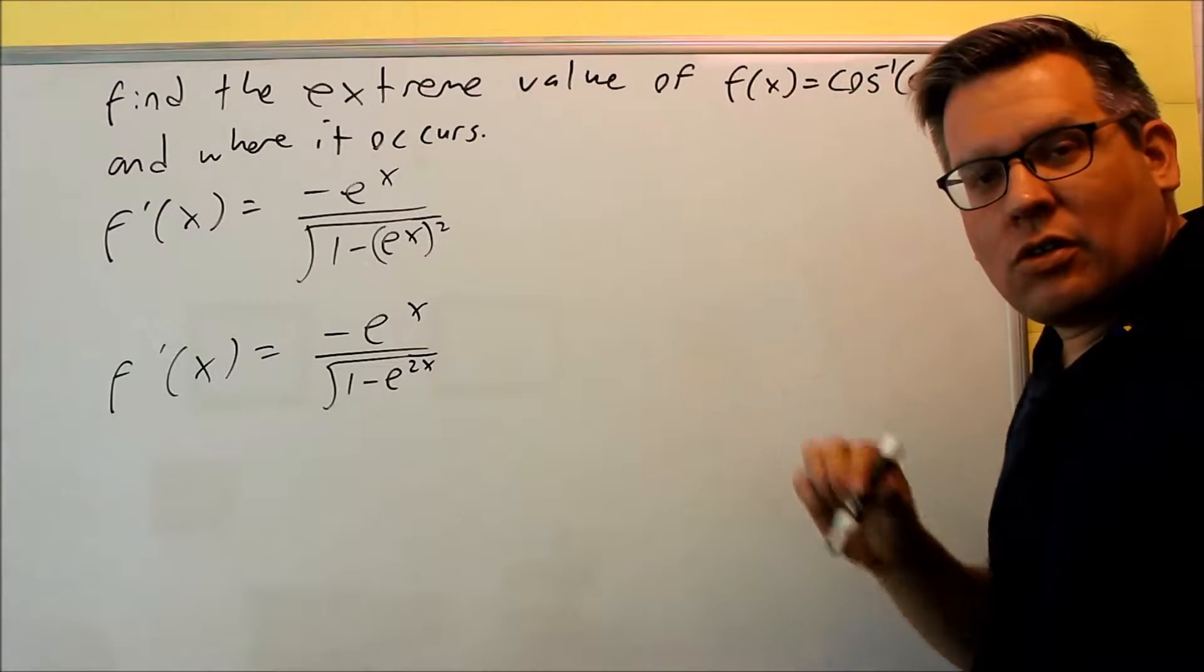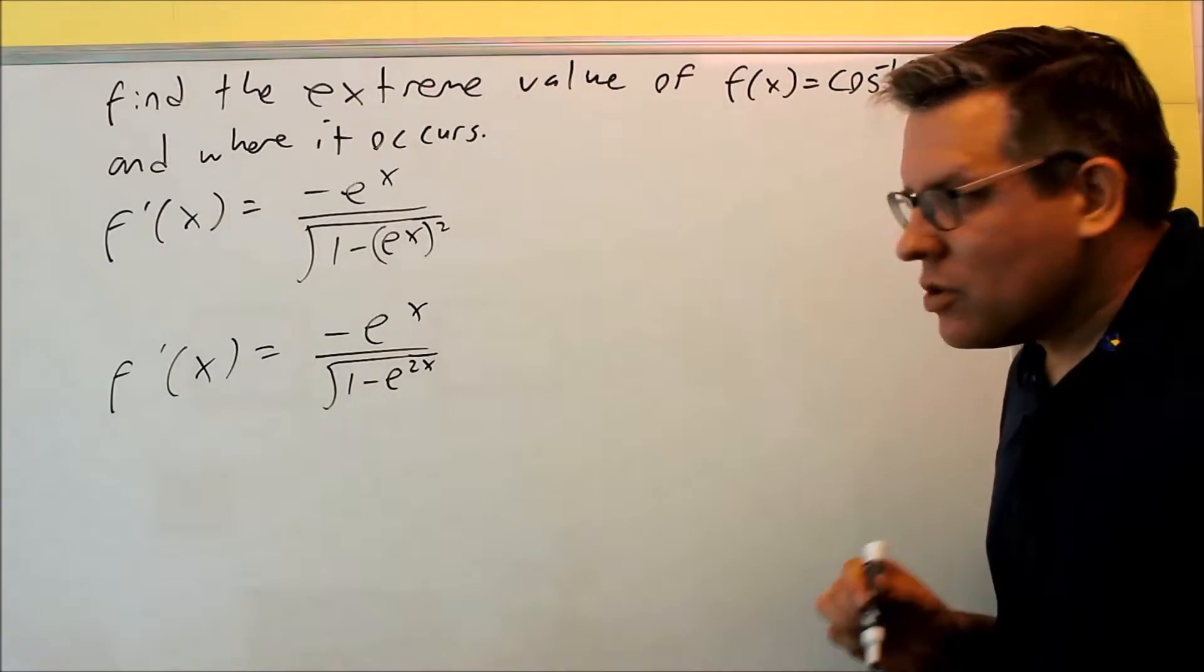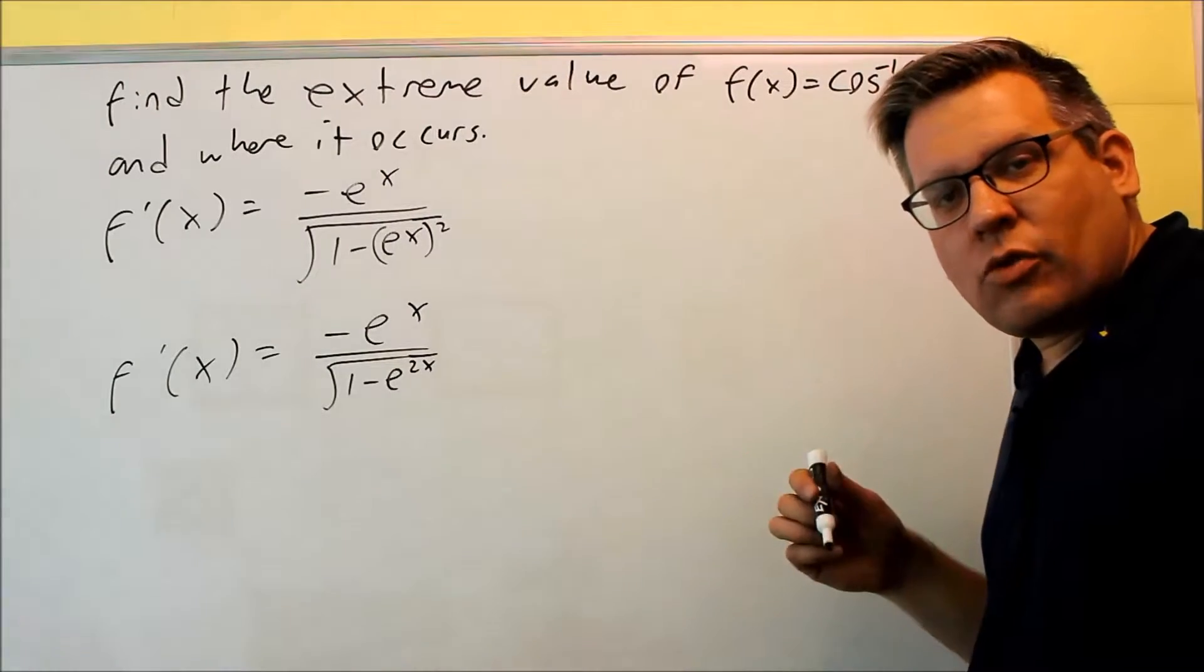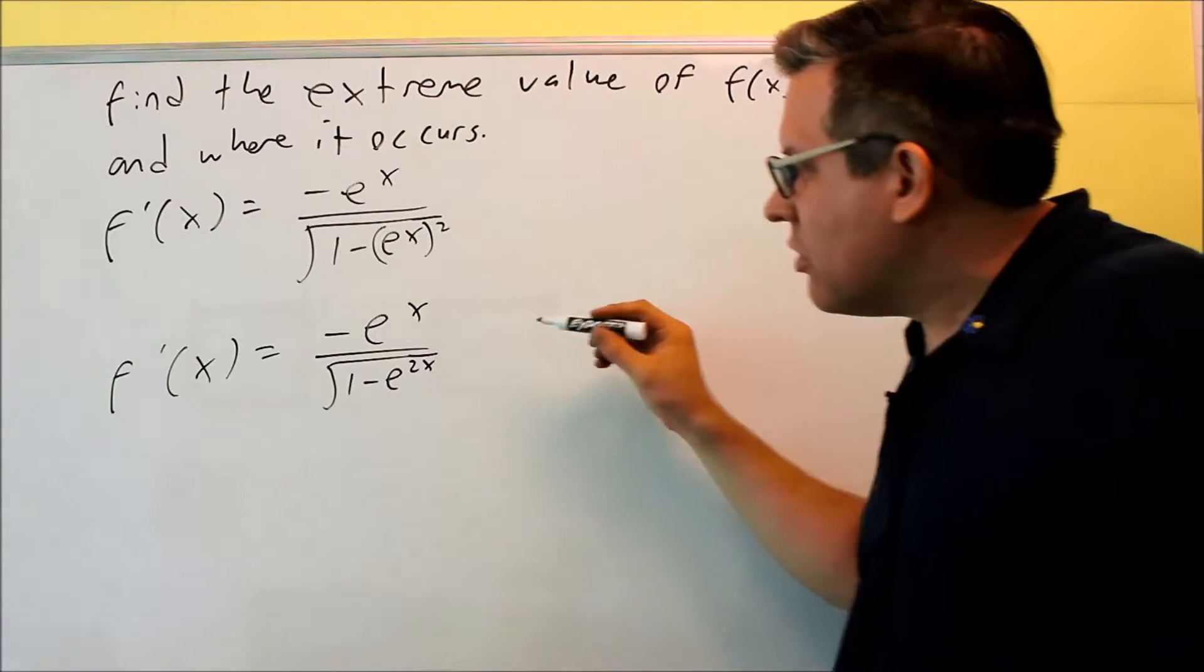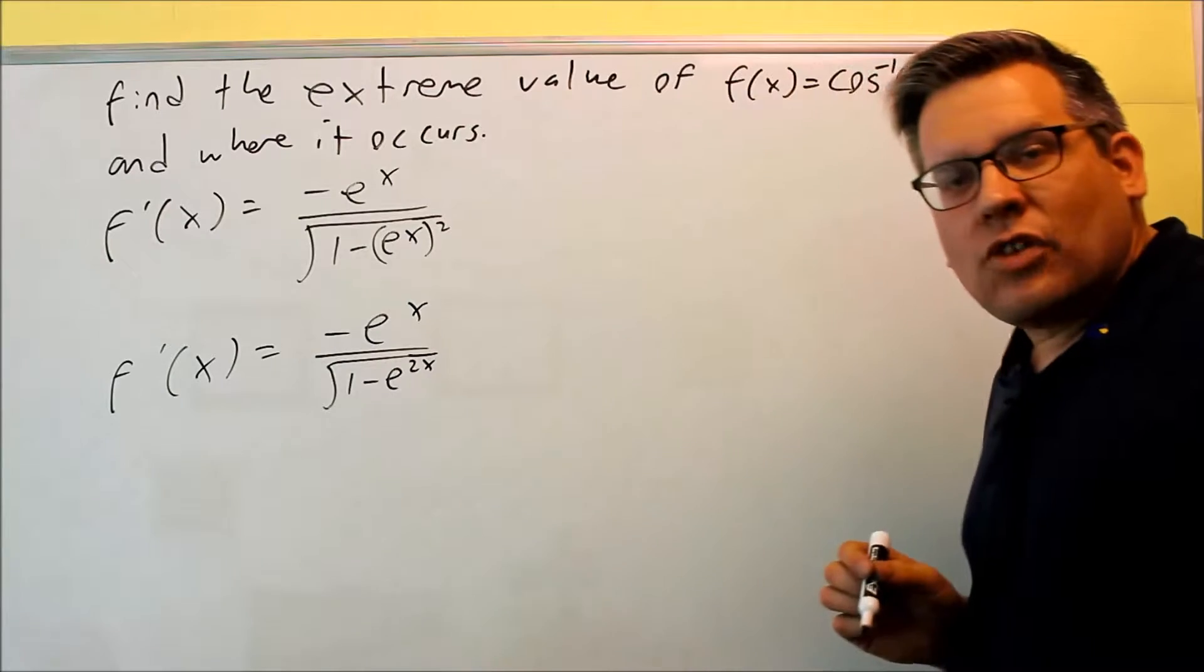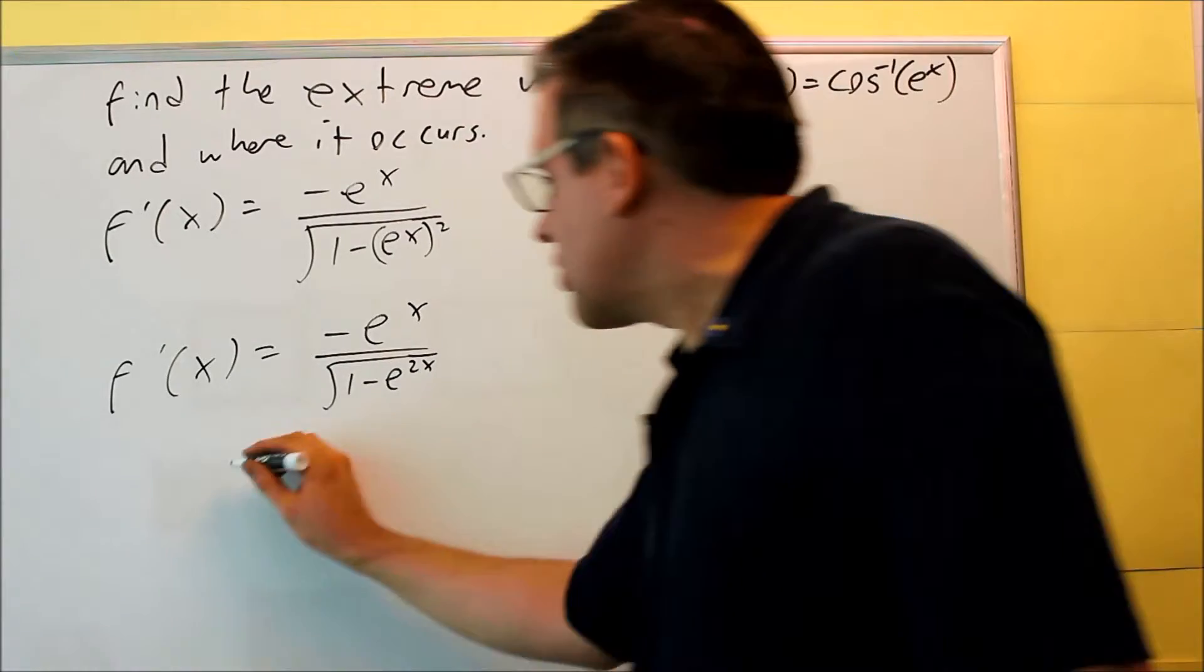Once you find the derivative, the next thing to do is to try and find the critical numbers. Critical numbers can be found two ways. The first way is to set the derivative equal to 0. So let's start with that.